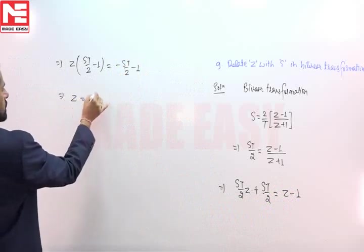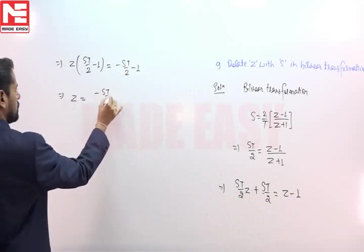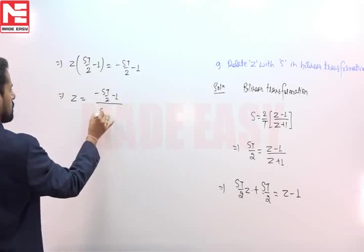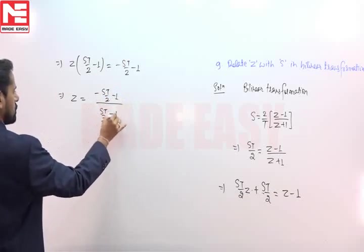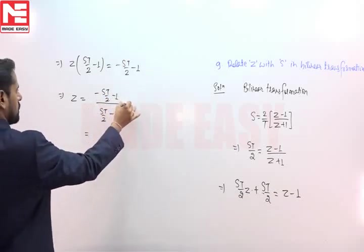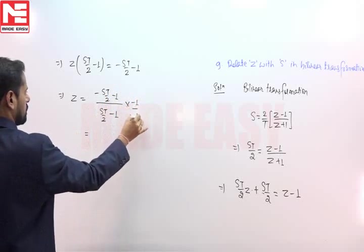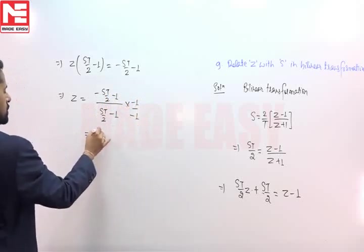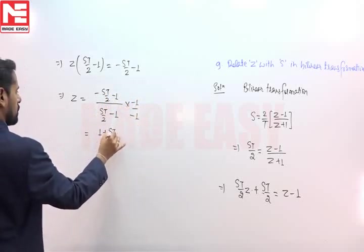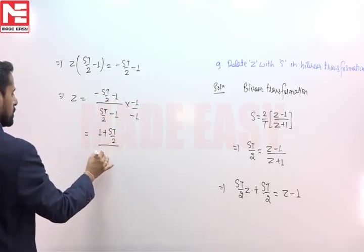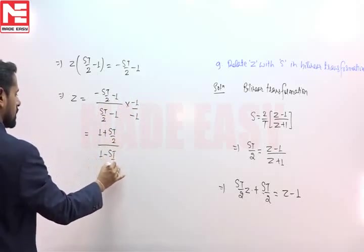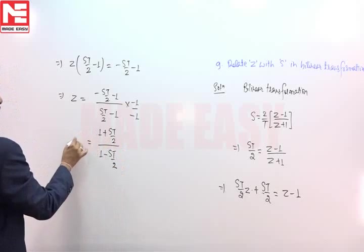So we can write z equals minus st by 2 minus 1 divided by st by 2 minus 1. If we multiply numerator and denominator with minus 1, the result will be equal to 1 plus st by 2 divided by 1 minus st by 2.